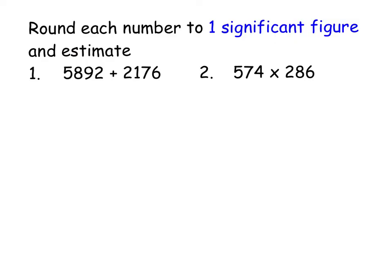So for these ones, I want us to round to one significant figure first and then estimate. Remember, one significant figure means we're going to keep the first digit from the left. So on the first number, we're going to keep potentially the 5. We'll look at the next number, which is an 8. An 8 in rounding means that that 5 is going to go up to 6. Now the other three digits all become zeros to keep the place value correct, so that that number is roughly the same size.